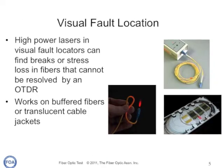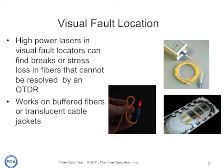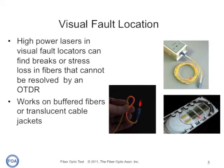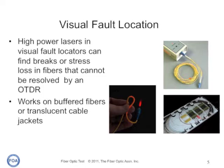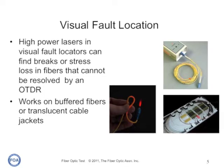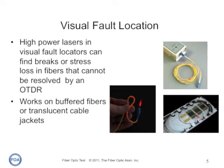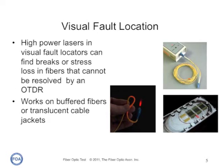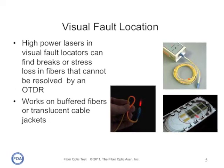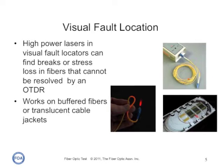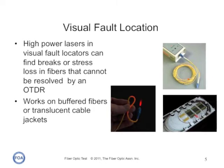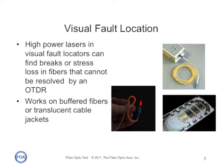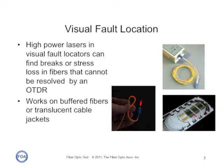A visual fault locator is a similar device, but it uses a higher powered red laser that has enough power that you can not only trace fibers, but you can see breaks or stress induced by bends in the fiber. It's really good, for example, for finding cracks that occur in fibers when they're placed in splice trays, or to find problems with patch cords.